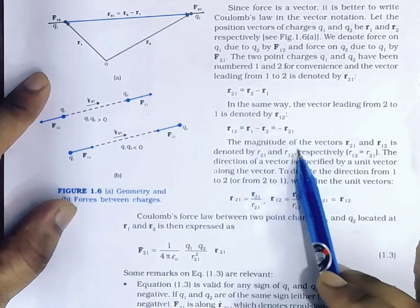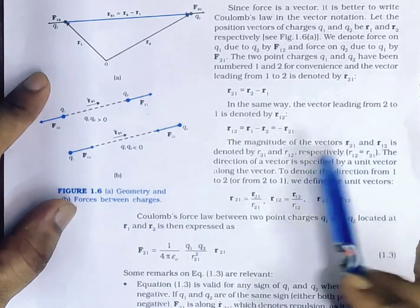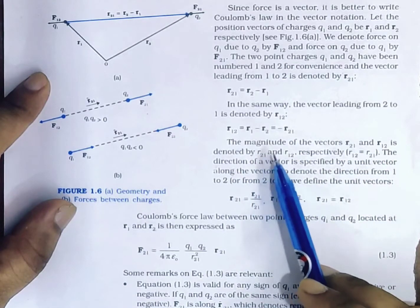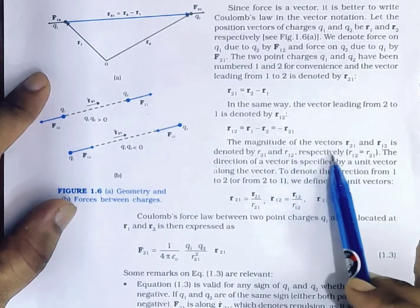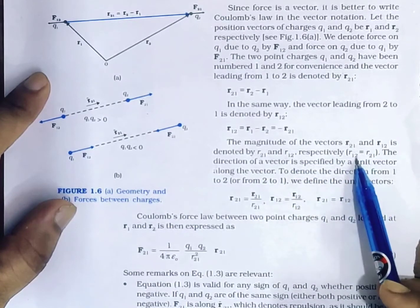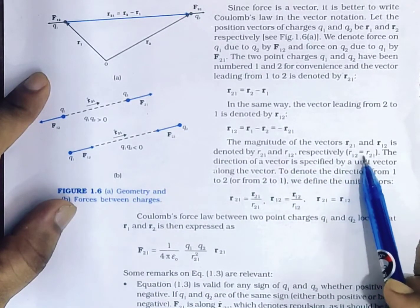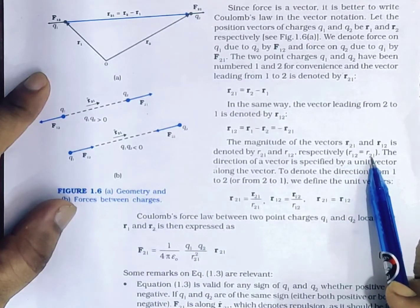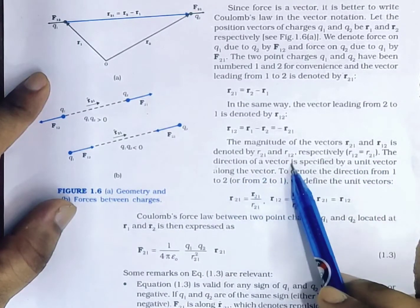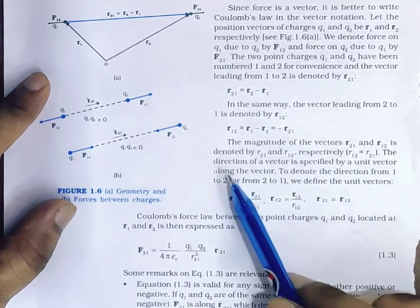The magnitude of vectors R21 and R12 is denoted by r21 and r12 respectively, and remember that r12 equals r21 in magnitude. The direction of a vector is specified by a unit vector along the vector.